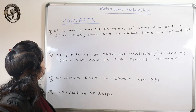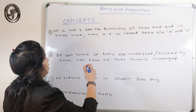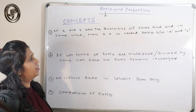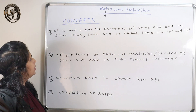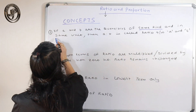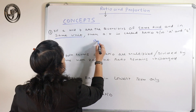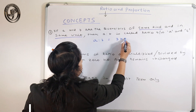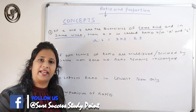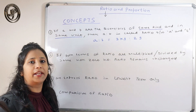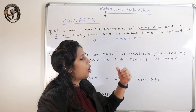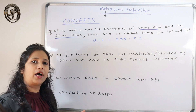The first concept: if a and b are quantities of the same kind and in the same unit, then a is to b is called the ratio between a and b. Two important things to focus on — same kind and same unit. For example, if the ratio is 3 kg to 2 grams, they are of the same kind since both measure mass.